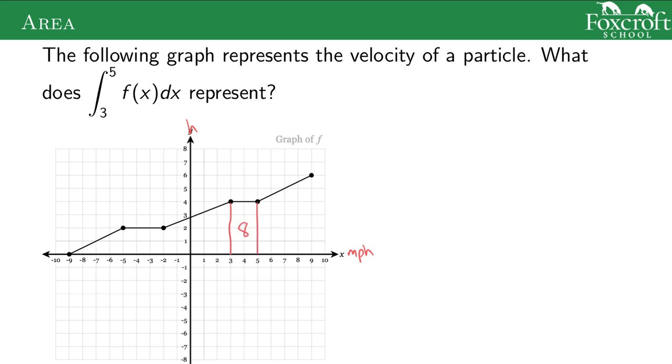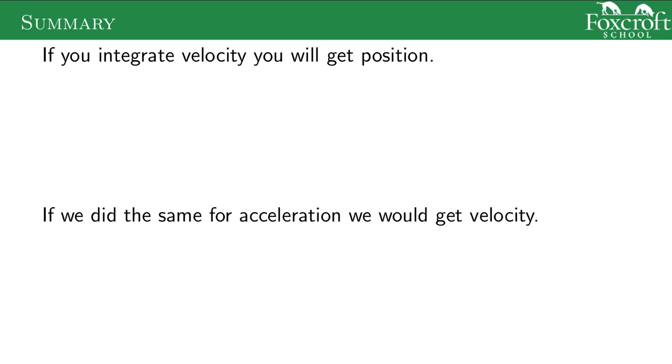8, but it's miles per hour is the unit in the x direction, the unit in the y direction is hours, and those cancel out and we get miles. So 8 miles is the area under this graph. And what does 8 miles represent? It represents how far I went from time 3 to time 5. So the area under the velocity function is telling me something about my position. It's changed by 8. So if you integrate velocity, you get information about position.